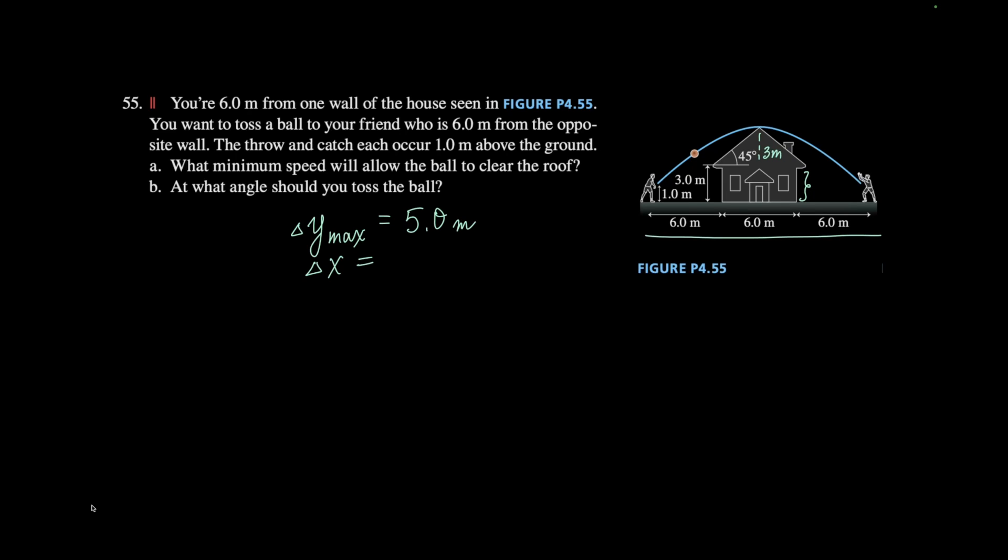The change in x is just all these 18 meters. So what minimum speed will allow the ball to clear the roof, and at what angle should you toss the ball? Why can't they just ask for initial velocity? I'm not sure.